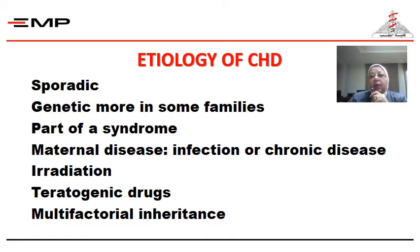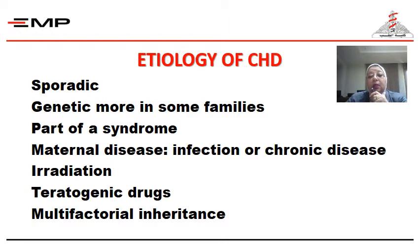It has a genetic basis, so it is more common in some families. It may be part of a syndrome, for instance Down syndrome, where they commonly have an atrioventricular septal defect. Maternal disease, whether acute infection, chronic infection, or a chronic disease like diabetes, can also contribute. Irradiation can cause congenital heart, as can teratogenic drugs — antiepileptics, thalidomide, and many others. By the end, it is said to be of multifactorial inheritance, meaning many factors contribute to the occurrence of a congenital heart disease.